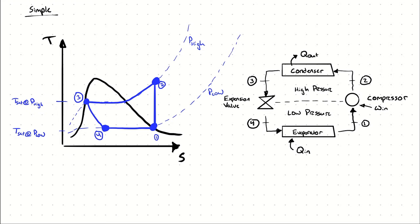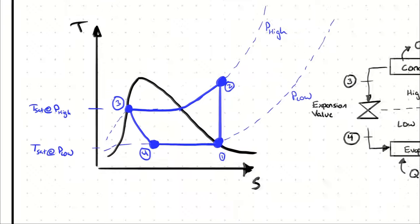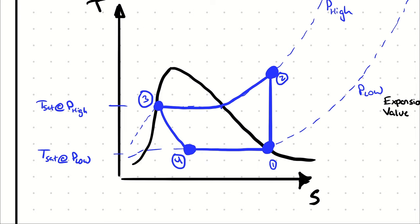One such operating condition we can consider is a large temperature difference — quotations on the word large, because large is relative. For that, let's look at the simple cycle's TS diagram. Remember that the horizontal displacement across the evaporator represents the heat transfer in, and the horizontal displacement across the condenser represents the heat transfer out. The region enclosed by the cycle represents the net work in, which for the simple case is also the work in because there is no work out.